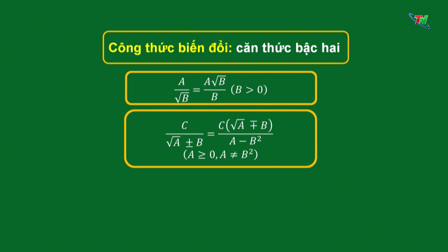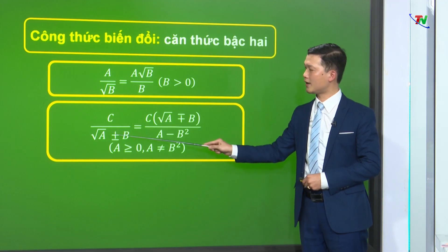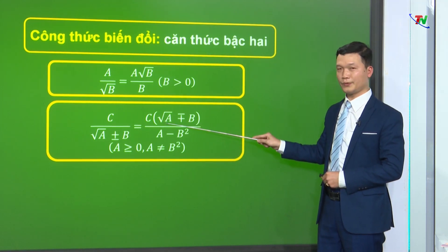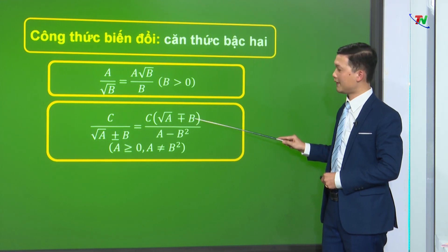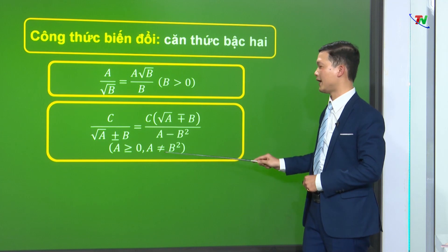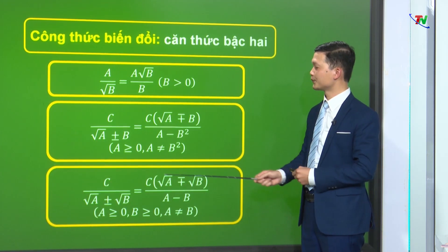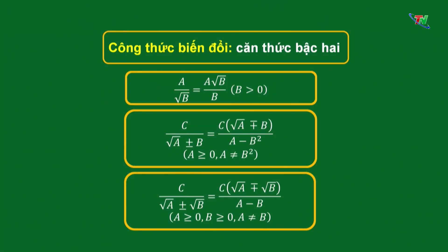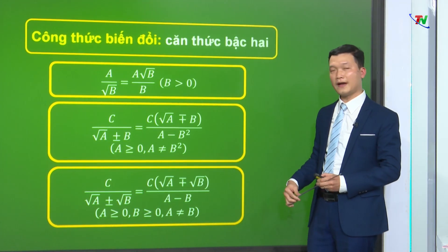Công thức trục căn ở mẫu thức với dạng C/(√A ± B): nhân liên hợp cả tử và mẫu với biểu thức liên hợp, đổi dấu thành (√A ∓ B), dưới mẫu áp dụng hằng đẳng thức hiệu 2 bình phương ta được A - B². Điều kiện A ≥ 0 và A ≠ B². Công thức cuối cùng với dạng C/(√A ± √B): nhân liên hợp với (√A ∓ √B), dưới mẫu là A - B. Điều kiện A ≥ 0, B ≥ 0 và A ≠ B.